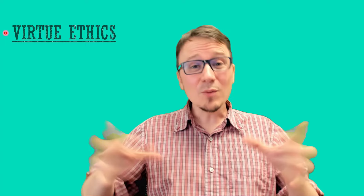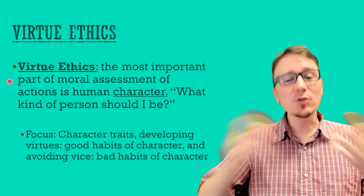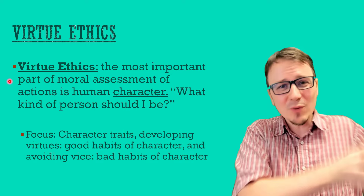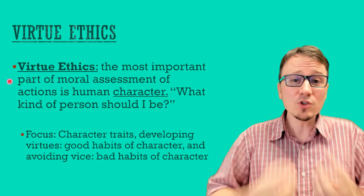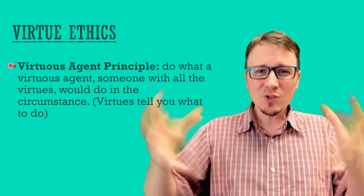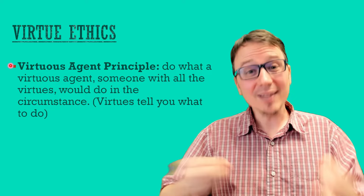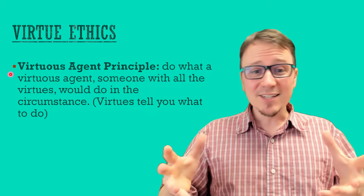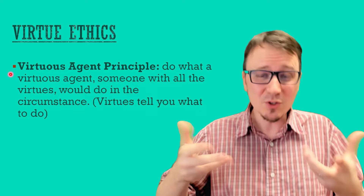Our final major group of moral theories is virtue ethics — in fact, it's the oldest of the three. Virtue ethics claims that the most important part of moral assessment of actions is human character. Going back to the very beginning of that structure of human action, the primary question we need to ask is: what kind of person should I be? The focus is on good character traits — virtues — and bad character traits — vices. Virtue theorists often claim that developing virtues is a matter of practical wisdom, so we shouldn't just look at a list of principles and try to follow them. But if we were to distill the theory into a principle, it would be the virtuous agent principle: do what a virtuous agent — someone with all the virtues — would do in any given circumstance. Virtues tell you what you should do, and vices tell you what you should not do.